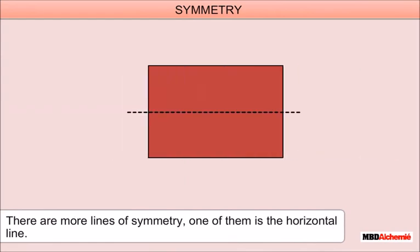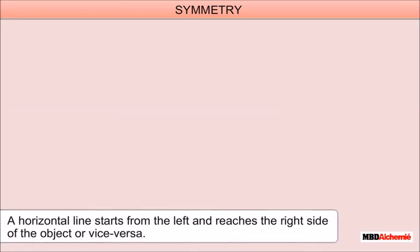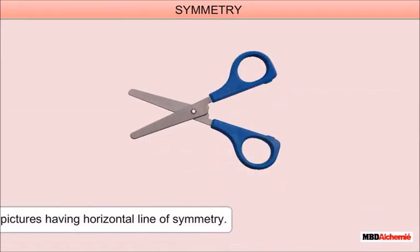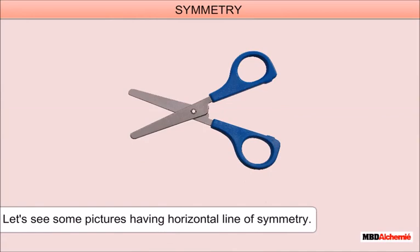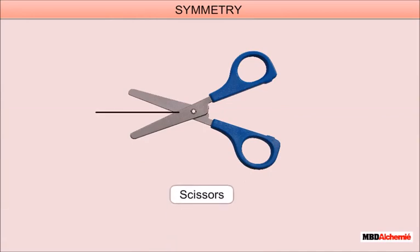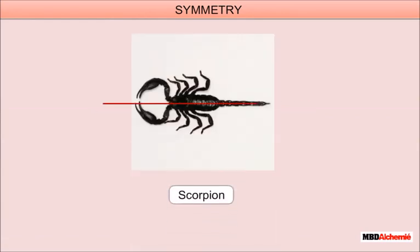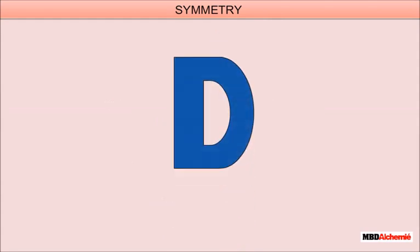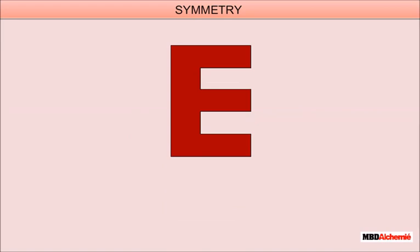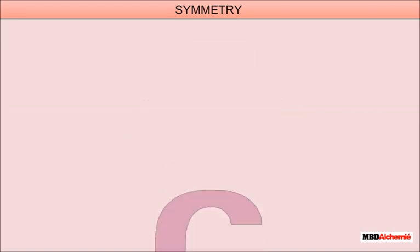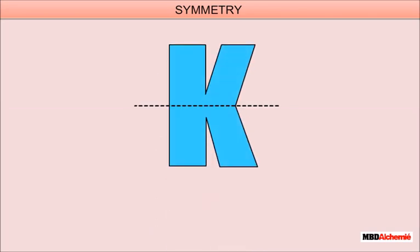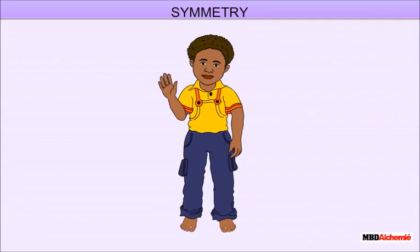There are more lines of symmetry. One of them is the horizontal line. A horizontal line starts from the left and reaches the right side of the object, or vice versa. Let's see some pictures having horizontal line of symmetry: scissors, scorpion, aeroplane, English letter D, English letter E, English letter C, and English letter K.